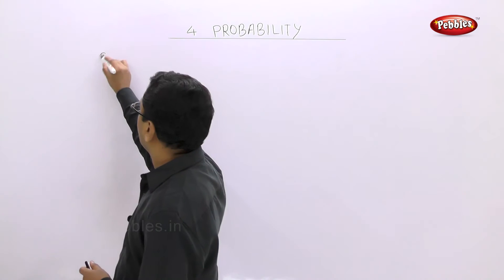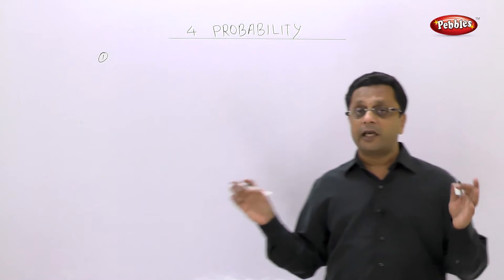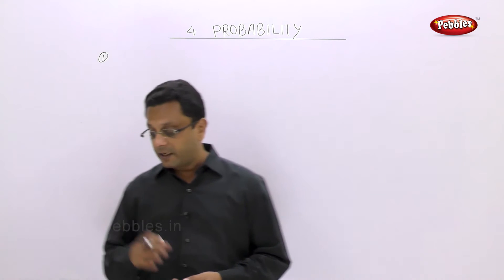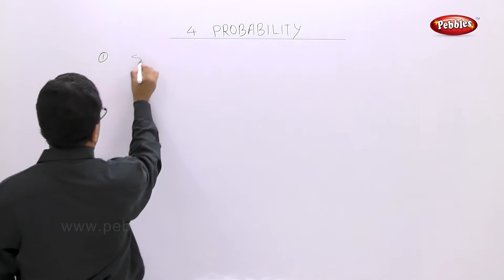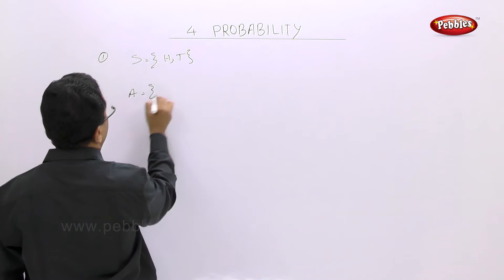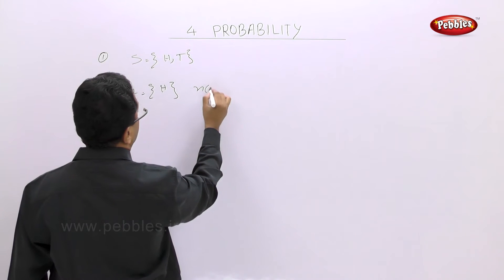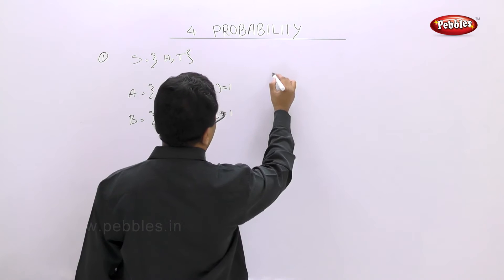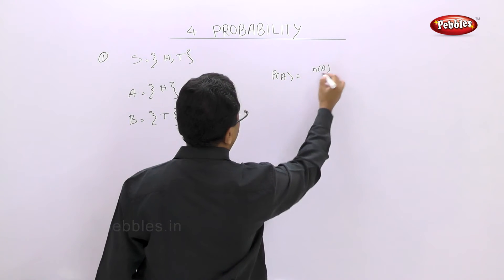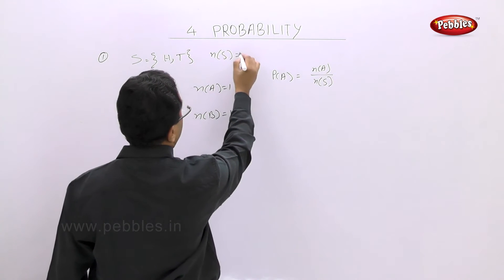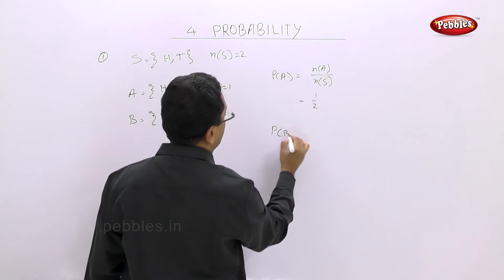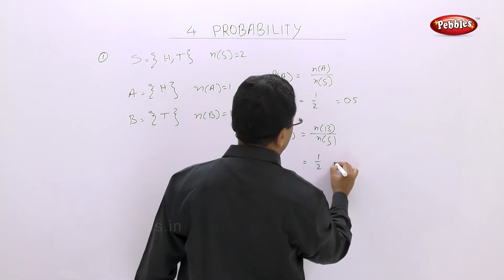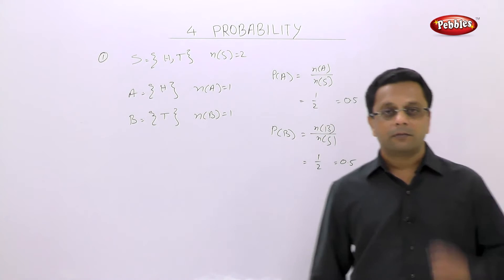The first example: a coin is tossed. Find the probability of getting heads and getting tails. If the coin is tossed, your sample space S = {H, T}, so n(S) = 2. Event A is getting heads: n(A) = 1. Event B is getting tails: n(B) = 1. So P(A) = n(A)/n(S) = 1/2. Also P(B) = n(B)/n(S) = 1/2. Or you can write 0.5 and 0.5. Very simple, absolutely simple examples.